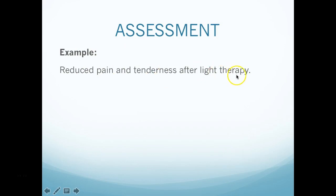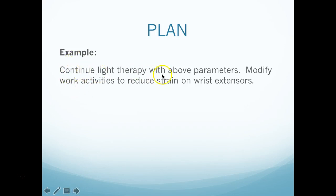Assessment: reduced pain and tenderness after light therapy — but remember to focus on function. What does less pain mean? Can the patient grip better? Add a functional assessment. Plan: continue light therapy with the above parameters, modify work activities to reduce strain on wrist extensors, and consider including a home exercise program. That's it for EMR and laser light therapy — I'll see you Monday to try it all out. Thanks, bye.